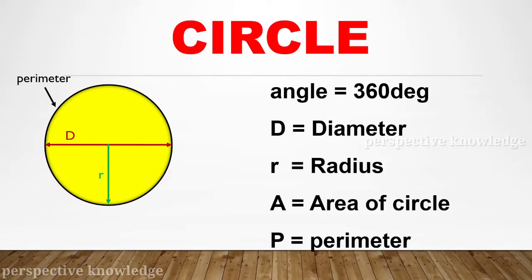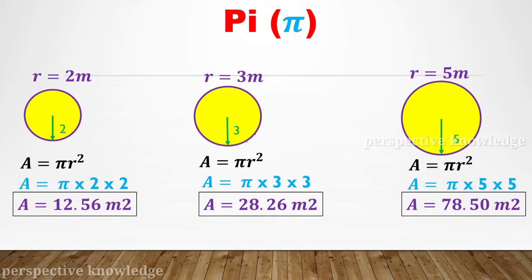First, circle. A circle has an angle of 360 degrees. D is the diameter of the circle. These are the main and basic parameters. If you draw a circle, that is the radius — that is a one-dimensional value. We will create a circle with a radius of 2 meters.